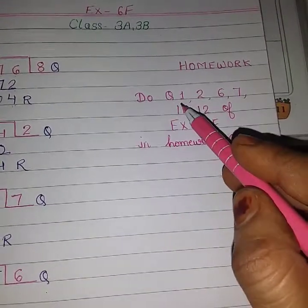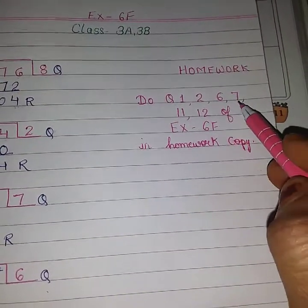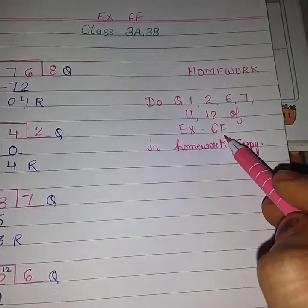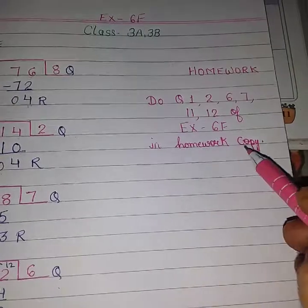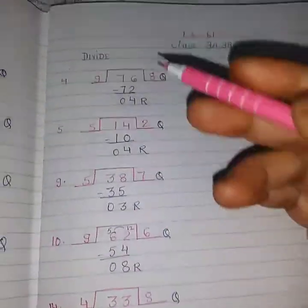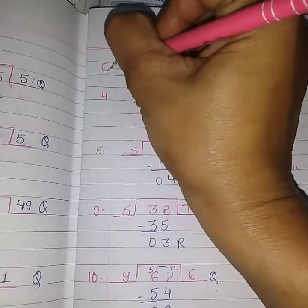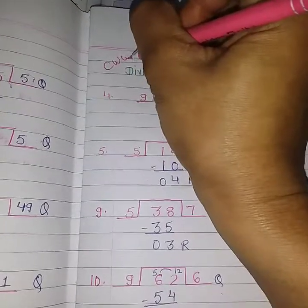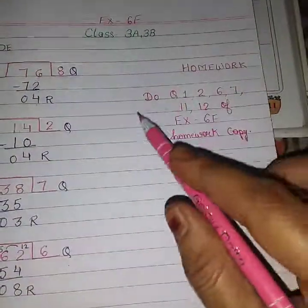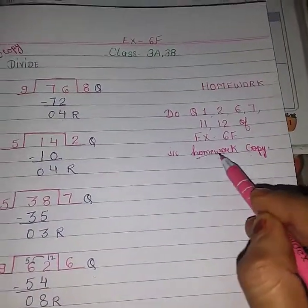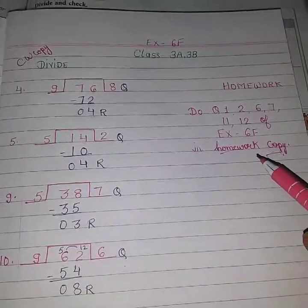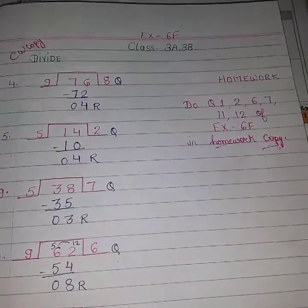Now here I have mentioned all the homework questions: question numbers 1, 2, 6, 7, 11, and 12 of Exercise 6F — you have to do these in your homework copy. All other questions do in the classwork copy. Keep this in mind. Thank you and have a nice day ahead. Goodbye.